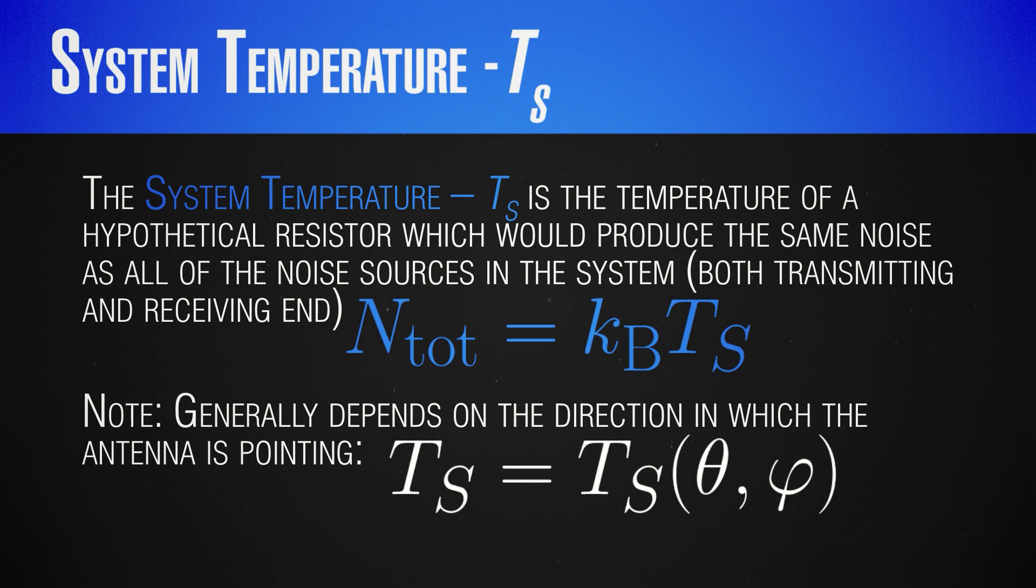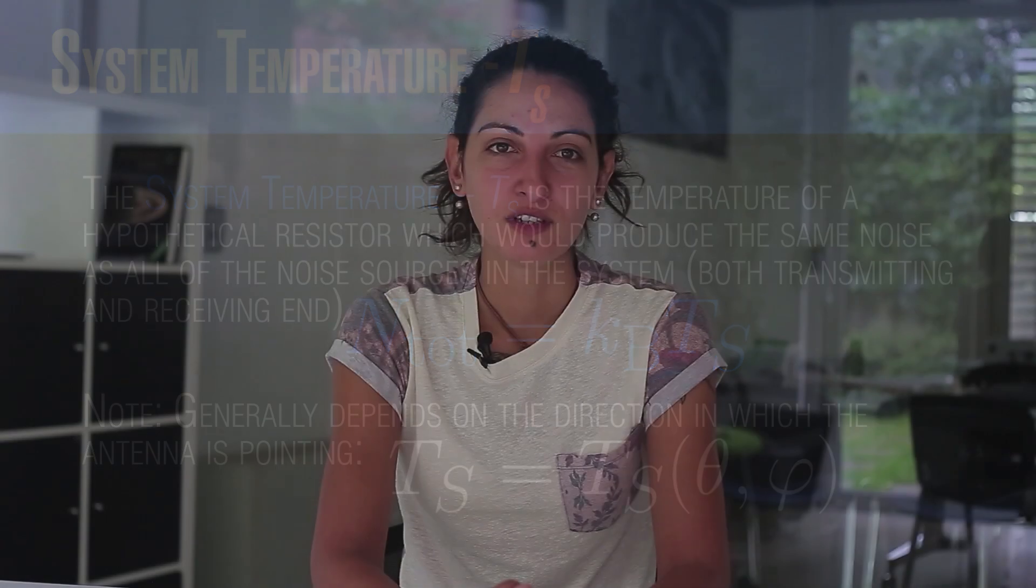But generally, we can estimate this temperature and its value for a given application and this allows us to evaluate the noise we will have in our system. So how can we include the noises mentioned and really evaluate our communication capabilities?